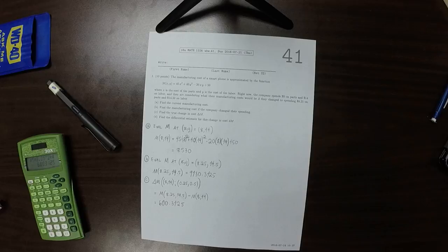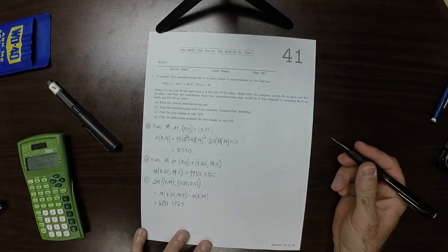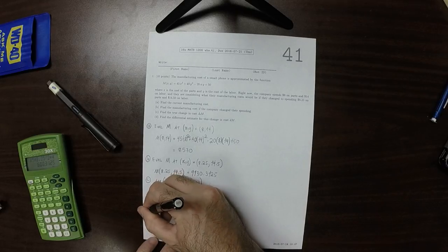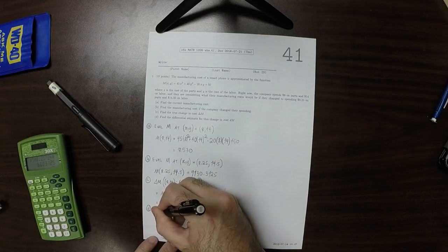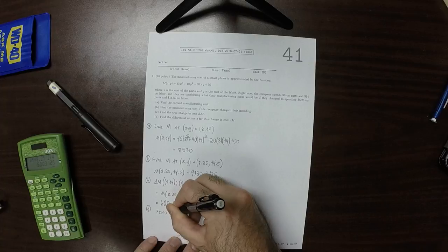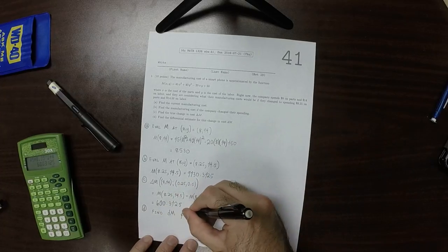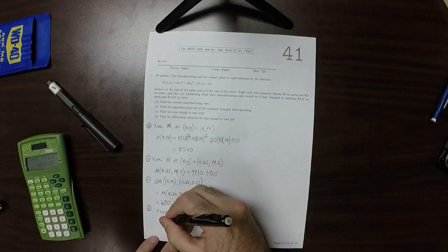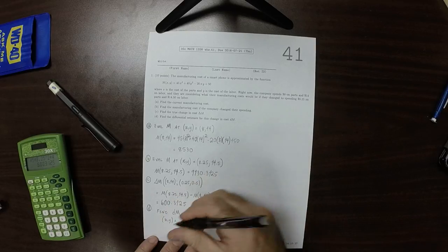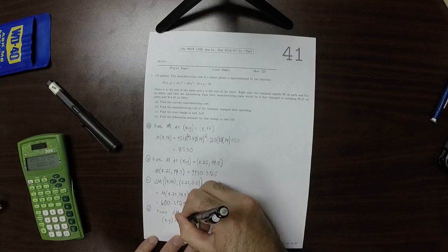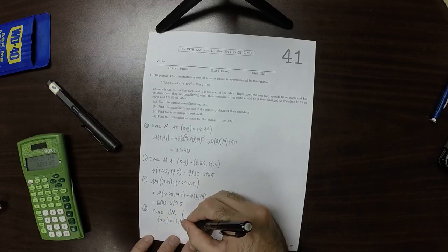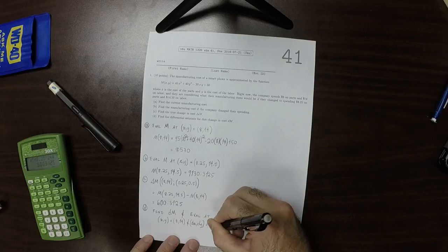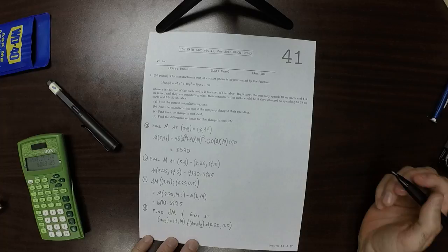What D is asking is find the differential estimate. So the differential estimate should be close to $600. So let's find the differential estimate. That is to say, let's find DM and evaluate at XY is 8, 14. And dx, dy is a quarter and a half.